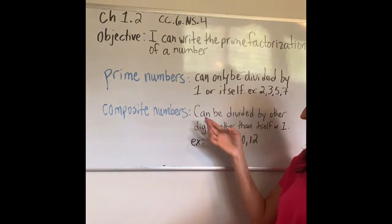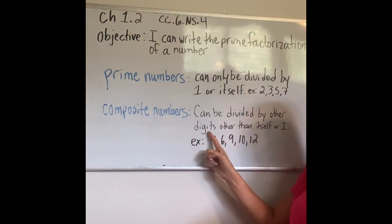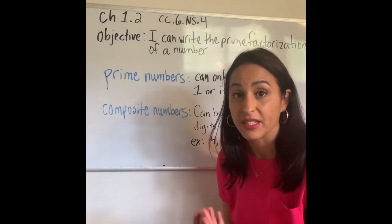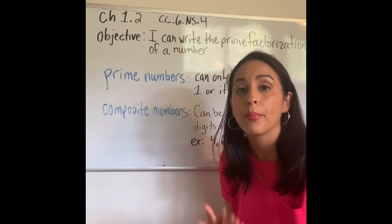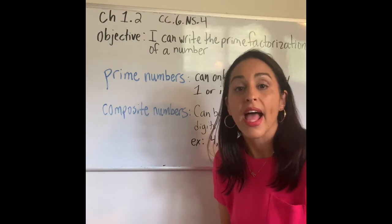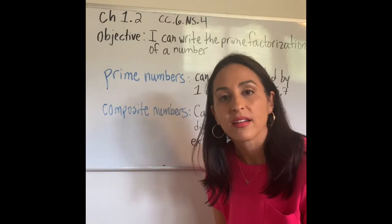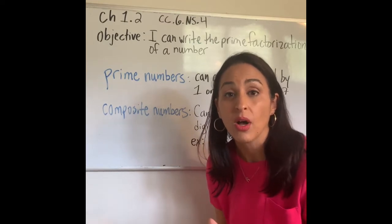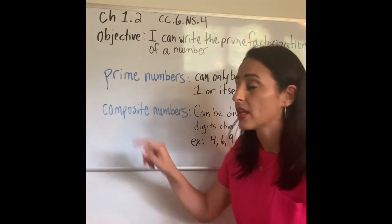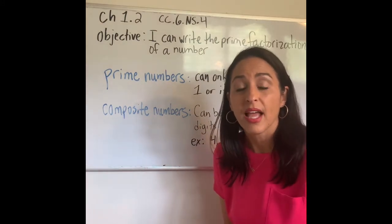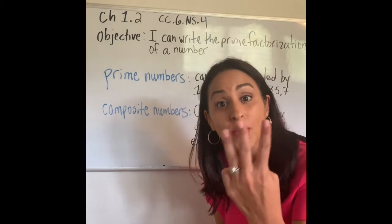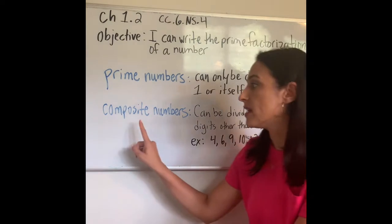Composite numbers can be divided by other digits other than itself or 1. Some examples: 4, 6, 9, 10, 12. Any number that can be divided by numbers besides itself and 1 is a composite number. So 4 divided by 4 is 1, and 4 divided by 1 is 4, but I can also do 4 divided by 2, which equals 2. There are other numbers besides 4 and 1 that go into 4 — this makes it composite, not prime. What about 6? 6 divided by 2 is 3, and 6 divided by 3 is 2, so 6 is a composite number.